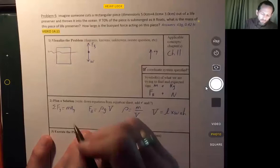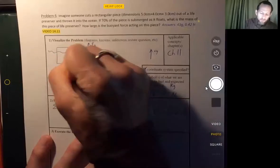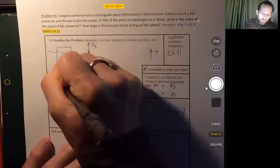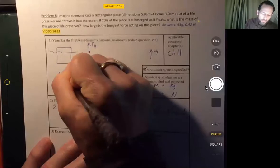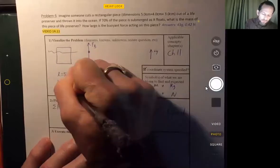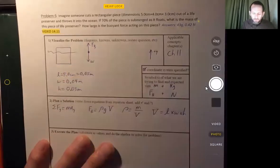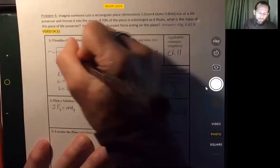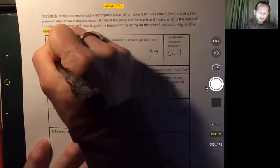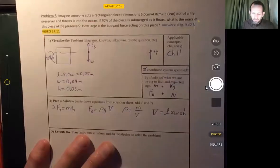What else is known? Well, the length is 5 centimeters or 0.05 meters, and the width is 4 centimeters or 0.04 meters, and the height is 0.03 meters. And we know this part that's under the water is 70% of the total. That's about all we know.